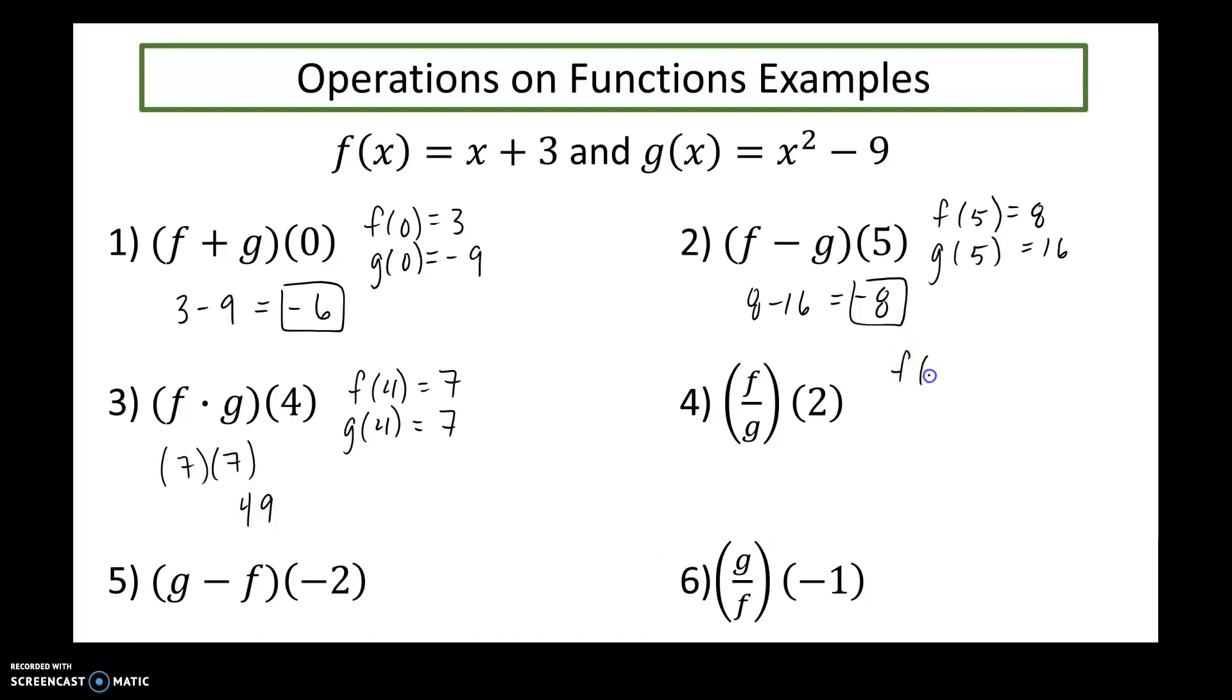g of negative two is negative five, f of negative two is one, so subtracting one from negative five, my final answer would be negative six. g of negative one is negative eight, f of negative one is two, so their resulting quotient would be negative four.